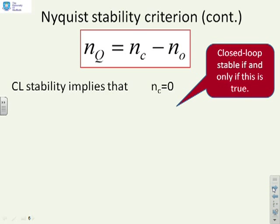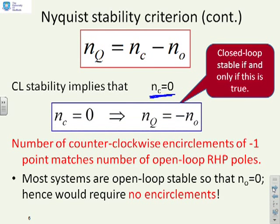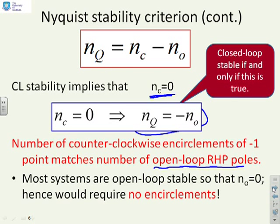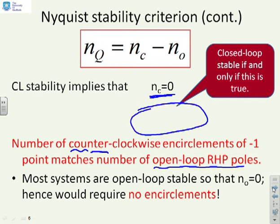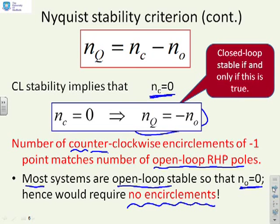For closed-loop stability, you must have Nc equals 0, since Nc is the number of closed-loop right-half-plane poles. So Nc equals 0 implies Nq must equal minus N0. The number of encirclements of the minus-1 point must match the number of open-loop right-half-plane poles, but because of the negative sign, encirclements must be counter-clockwise. Most systems are open-loop stable, so N0 is 0, meaning closed-loop stability requires no encirclements of minus-1.